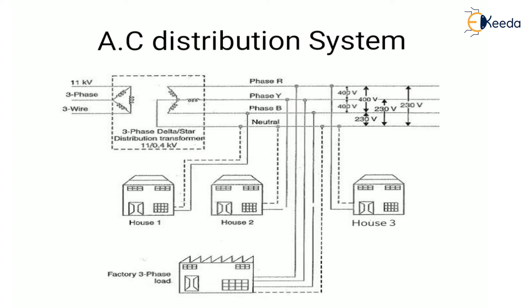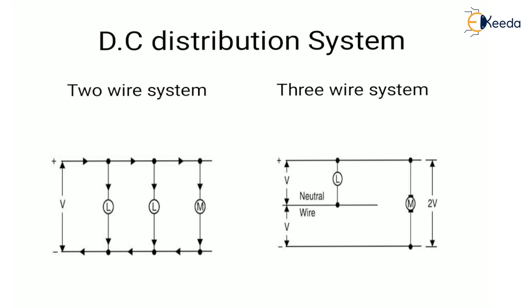The three-wire system consists of three wires: two outer wires and one middle or neutral wire. The voltage between the outer wires is twice the voltage between either outer wire and the neutral wire. Two voltages are available — loads requiring higher voltage are connected across the outer wires, and lamps requiring less voltage are connected between either outer wire and the neutral.